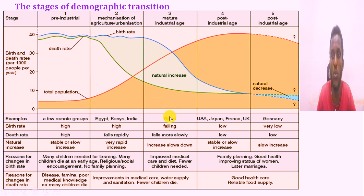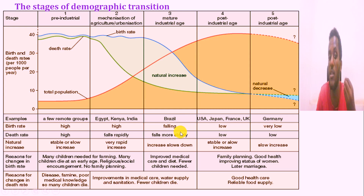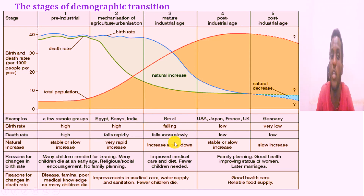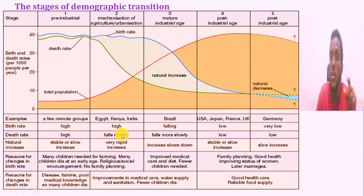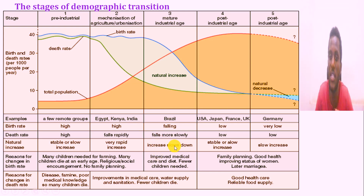For example, in countries like Brazil, as industrialization and globalization occur, there is an industrial age with high-level development. Medical improvements increase, and the overall population continues to grow during this phase of the demographic transition.